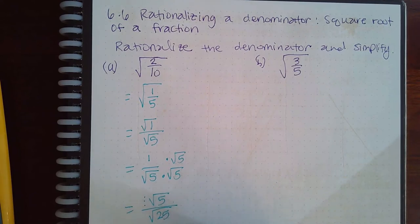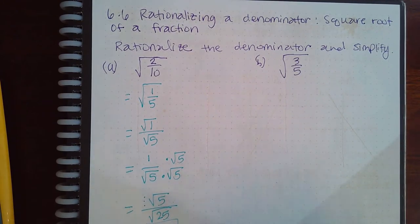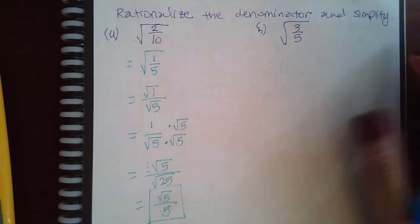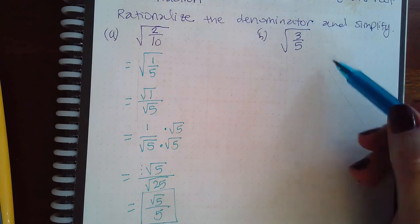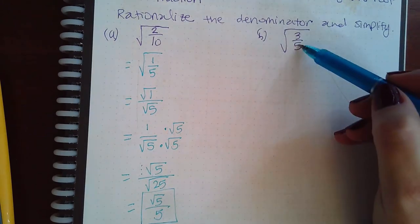So we end up with square root of five over a regular five as the final answer. Now for part b, it's a little bit different because these do not reduce, and since they do not reduce, we're just going to take the top and the bottom separate.